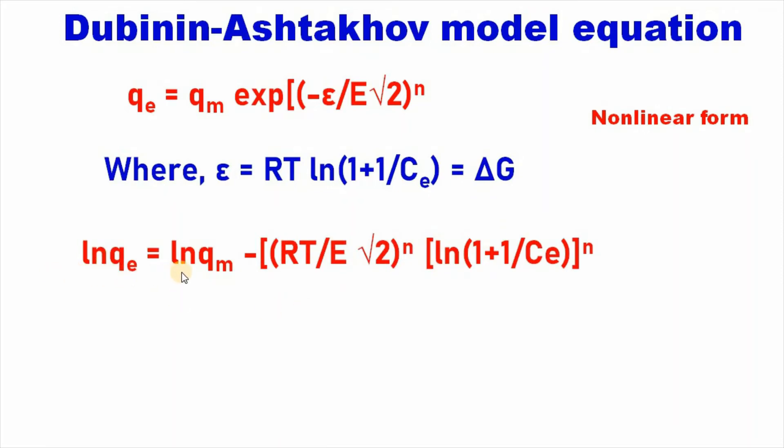The linear equation can be written as ln q equal to ln qm minus RT divided by E root over 2 to the power n into ln(1 plus 1 by C) to the power n.